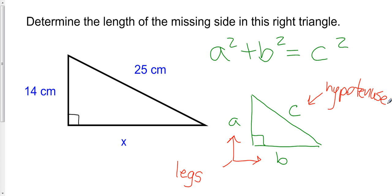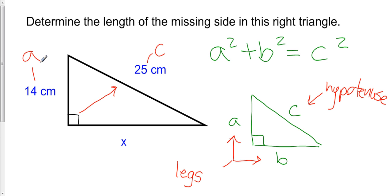So we know what the hypotenuse is. The hypotenuse is always opposite the right angle. Here, our c value is 25 centimeters, and we know what our a value is, so we're missing our b value — we're missing one of the legs.